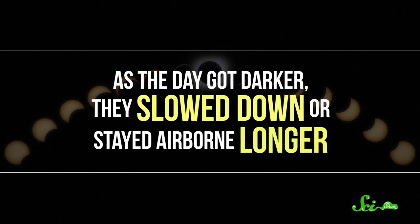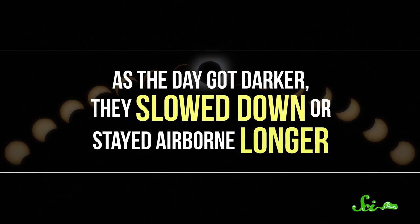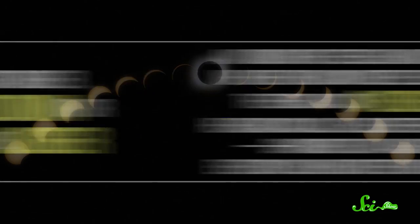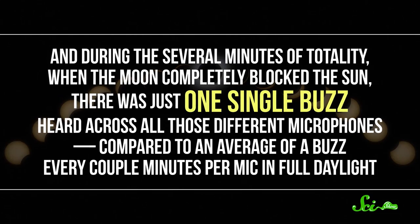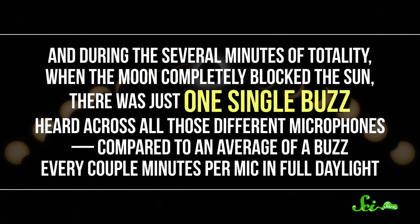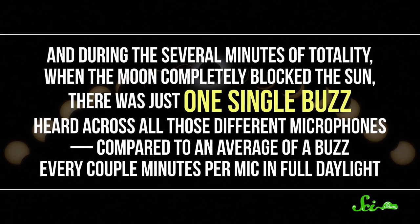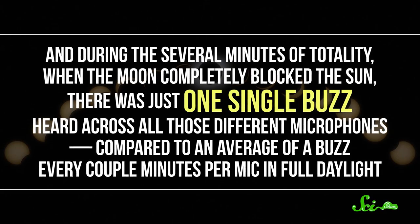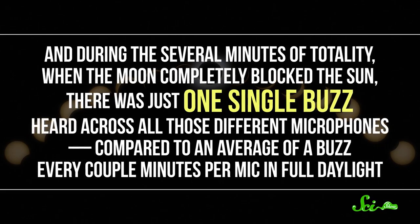Thanks to all that assistance, the team discovered that bees are really affected by changing light levels during an eclipse. As the day got darker, they slowed down or stayed airborne longer. And during the several minutes of totality, when the moon completely blocked the sun, there was just one single buzz heard across all those different microphones, compared to an average of a buzz every couple minutes per mic in full daylight.